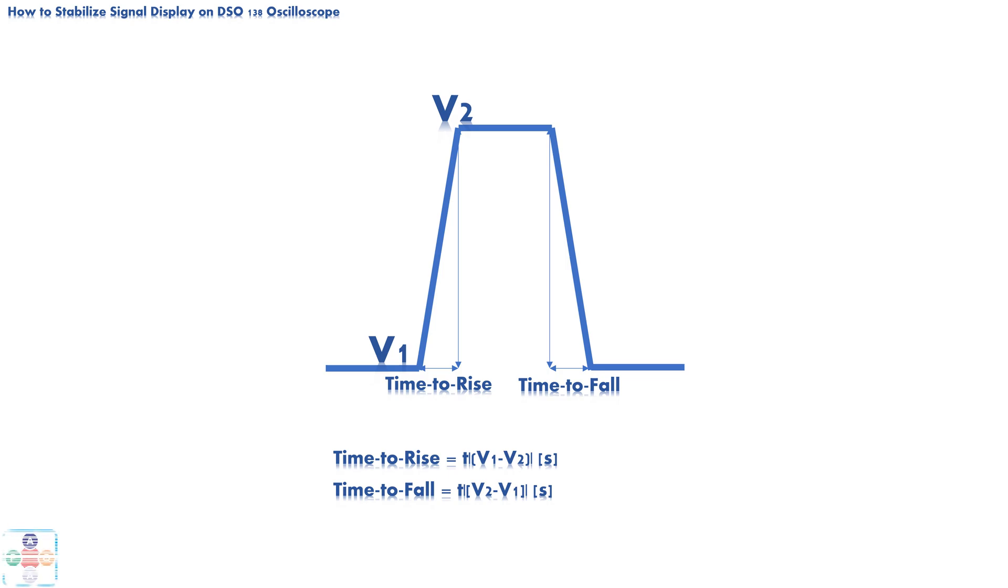As we will learn later in videos to come, in electronic, nothing is ever perfect or ideal, and there are always compromises and acceptable margins of error. For the most practical purposes and implementations, we assume that real-life square signal is an ideal signal, and that time to rise and time to fall are always zero seconds.